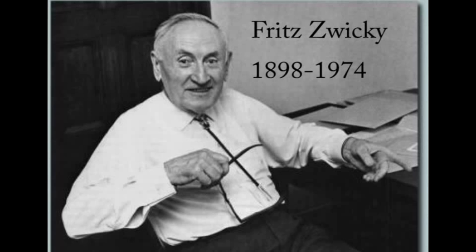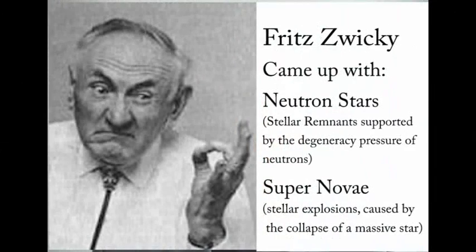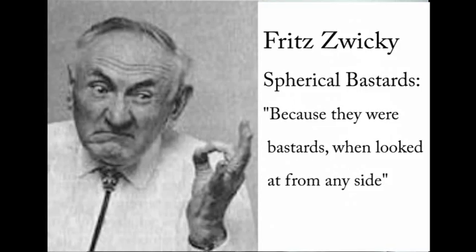The first person to show the existence of dark matter was the Swiss astronomer Fritz Zwicky, a very brilliant man who also came up with several other scientific concepts including neutron stars and supernovas. He also invented the term 'spherical bastards,' which he used to call some of his astronomer colleagues when they disagreed with him. His reasoning was that just like a sphere is round from whatever way you look at it, so they're bastards from whatever way you look at them. I suppose he was a bit eccentric, but let's move on.